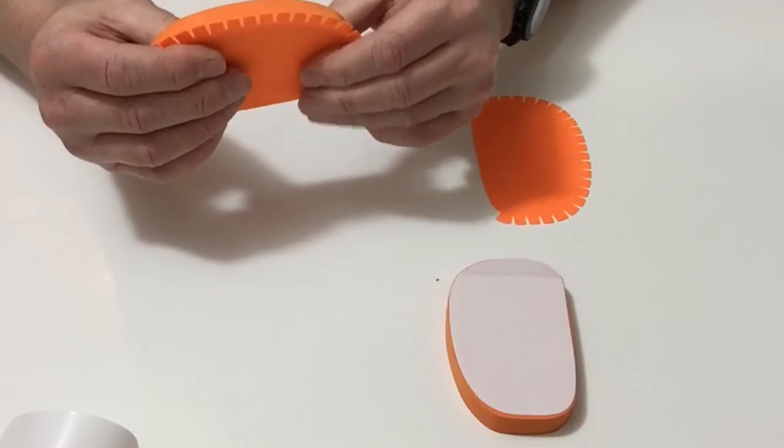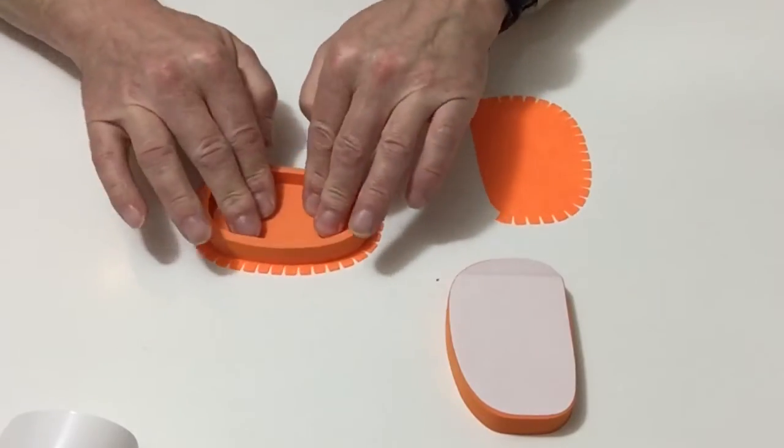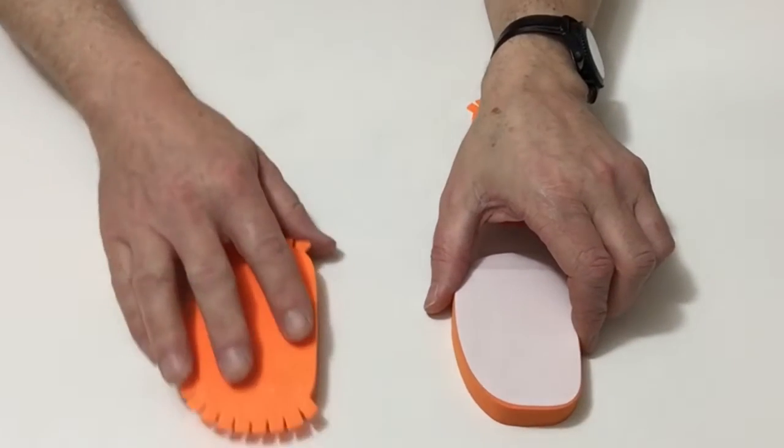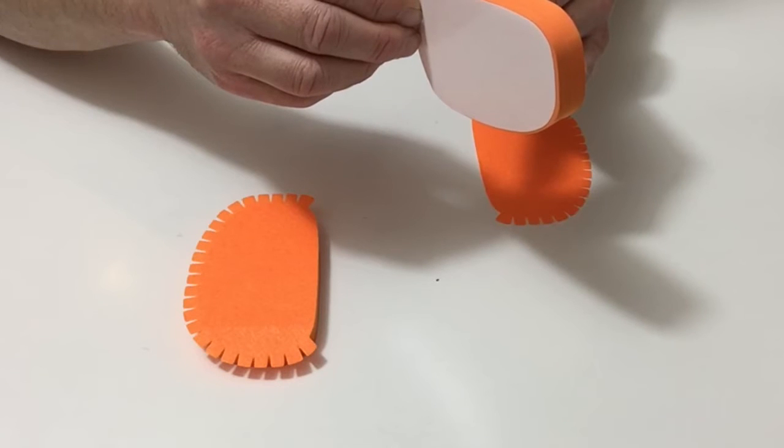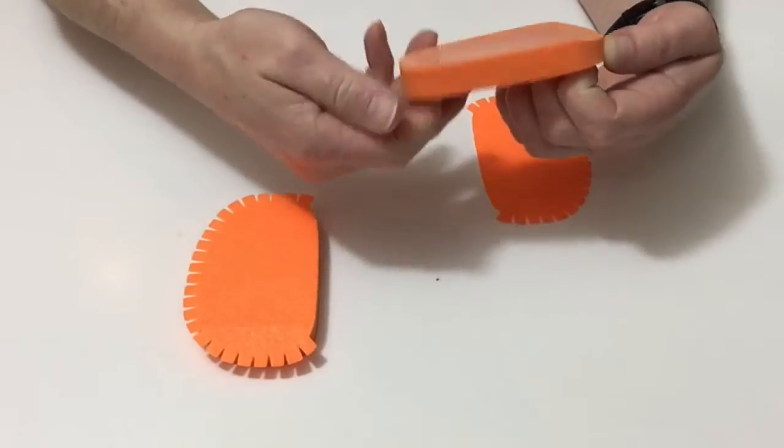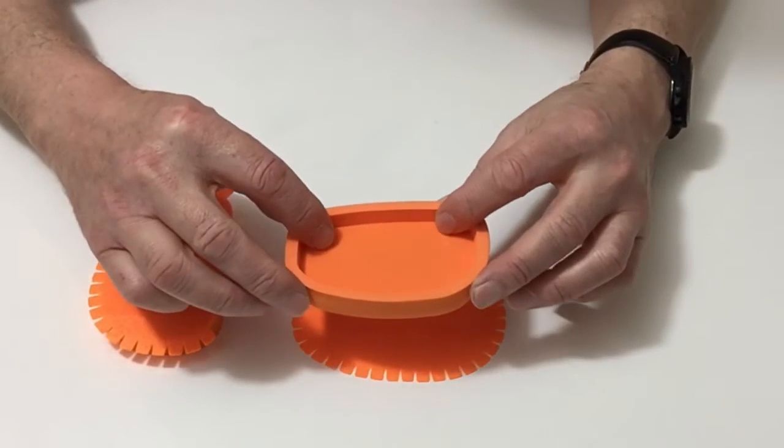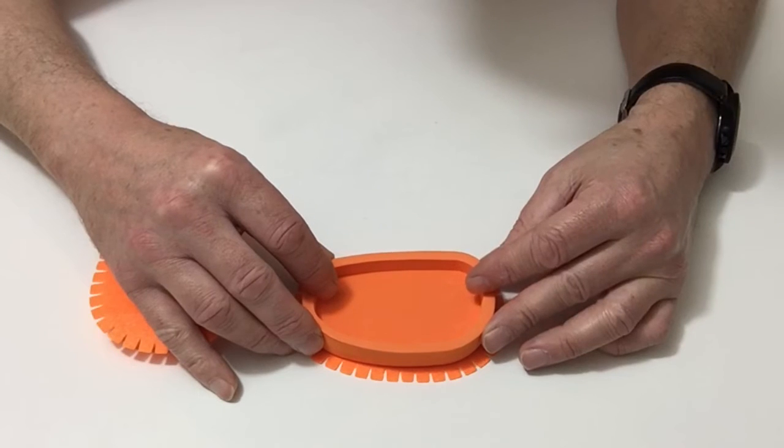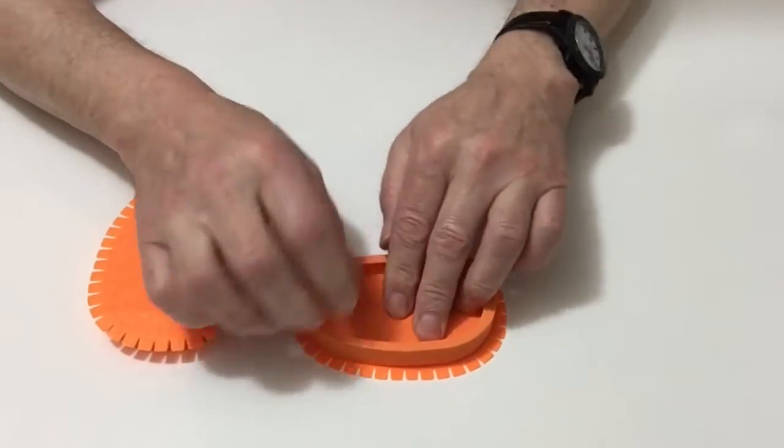Do exactly the same for the other one. Carefully remove the backing paper. Once again, take the felt base and line it up with the sole. Once you've lined that up, press that down. Make sure that it's nicely stuck down.